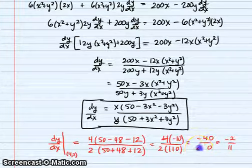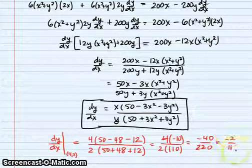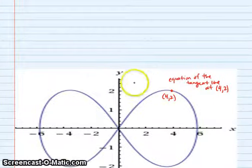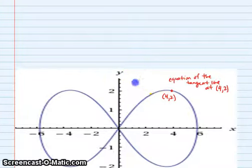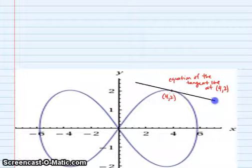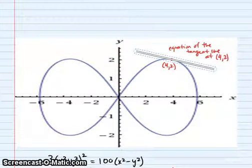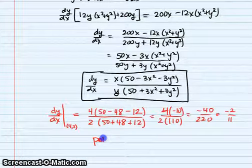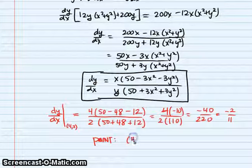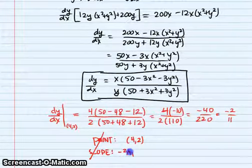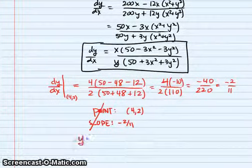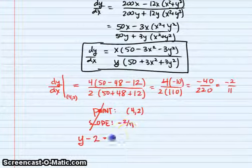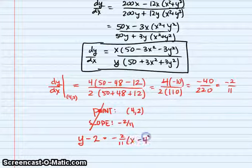Let's verify that makes sense. If we drew a tangent line on the graph, a slope of negative 2 over 11 is not very steep and it's negative — that looks about right. So our point is (4, 2) and the slope is negative 2 over 11. Using point-slope form: y minus 2 equals negative 2 over 11 times (x minus 4). And we're done.